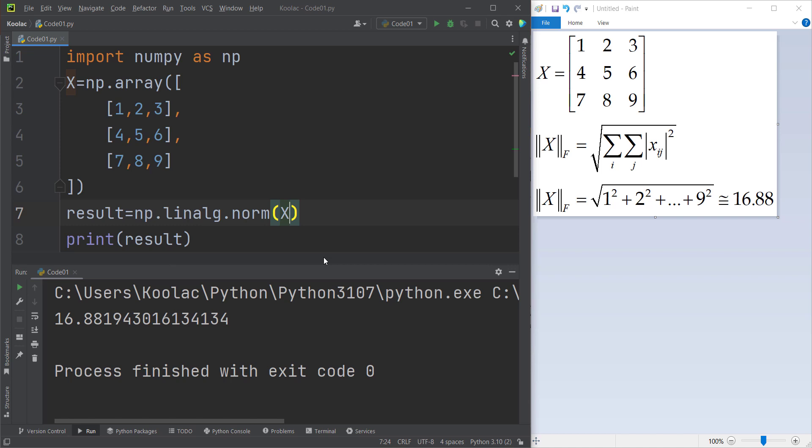So once again, if I run the code, you can see we get the same output, because the default argument for calculating the norm of a matrix is the Frobenius norm. Now I really suggest you to watch this video, which is on the screen now.